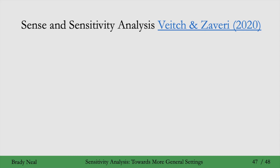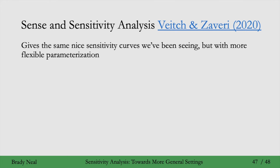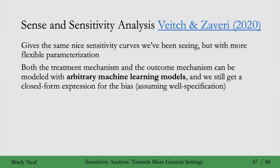I'll highlight one more paper. The main theme is that these papers allow for much more flexible functional forms of the structural equations for treatment and outcome. This last one didn't put any restrictions on the functional form for treatment. Similarly, in this paper they give us those nice sensitivity curves without assuming linear outcome or linear treatment — rather, it can be a much more flexible parameterization. More specifically, they allow for the treatment mechanism and the outcome mechanism to be modeled with arbitrary machine learning models, much like the model-assisted estimators we saw, but applied here to sensitivity analysis.